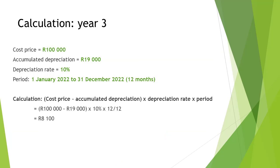In the third year, the depreciation will be calculated as R100,000 cost price less R19,000 accumulated depreciation, times 10%, times 12 months divided by 12 months, totaling R8,100 depreciation to be recorded.